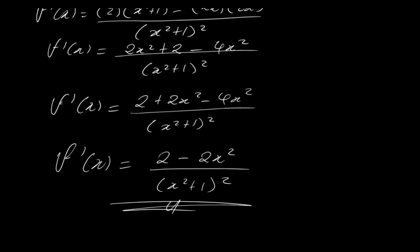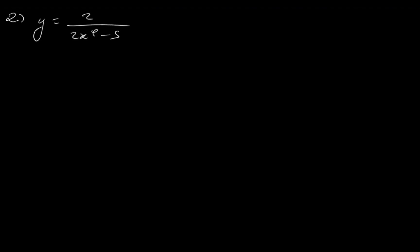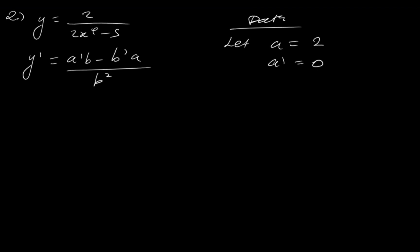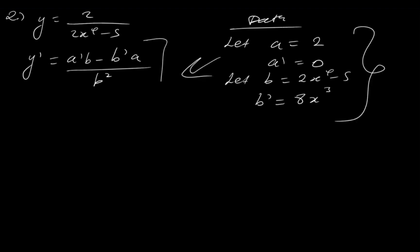Let's move on to another example. Example 2: y is equal to 2 over 2x to the 4th minus 5. Remember, y prime will be a prime b minus b prime a over b squared. All we have to do is collect data. Let a be equal to what's on top, which is 2. And a prime will simply be the derivative of a constant, which is 0. Let b be equal to what's at the bottom, which is 2x to the 4th minus 5. Applying the power rule, b prime is 8x cubed.